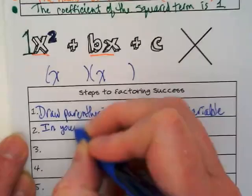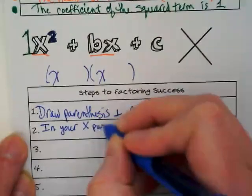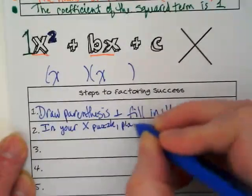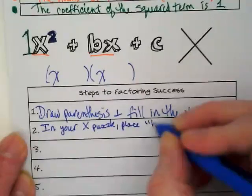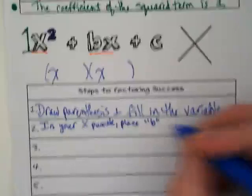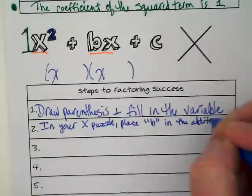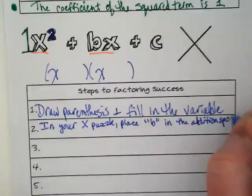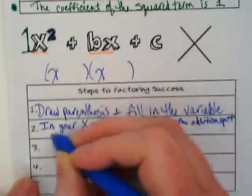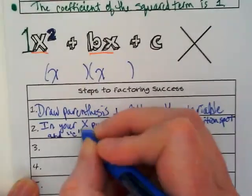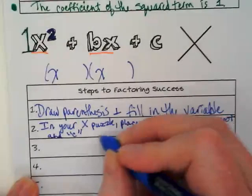Here's the directions for the X puzzle. In your X puzzle, place the b in the addition spot and place the c in the multiplication spot.